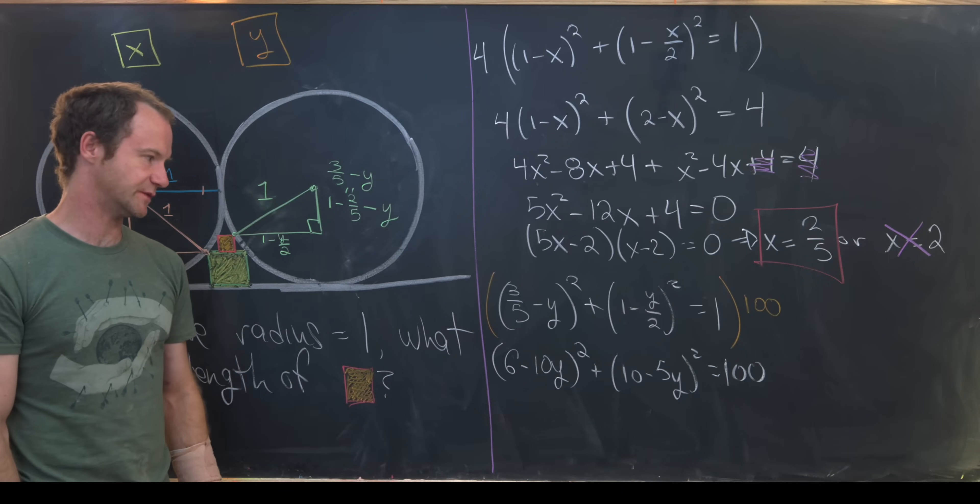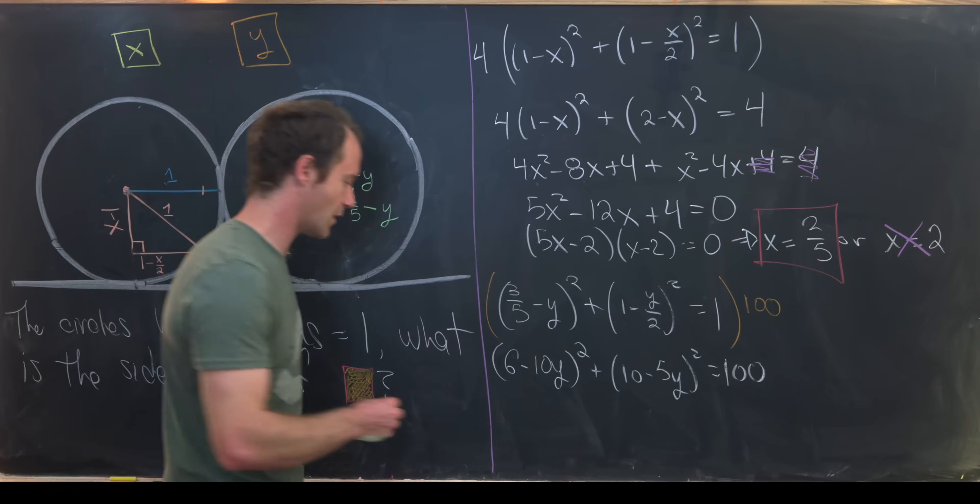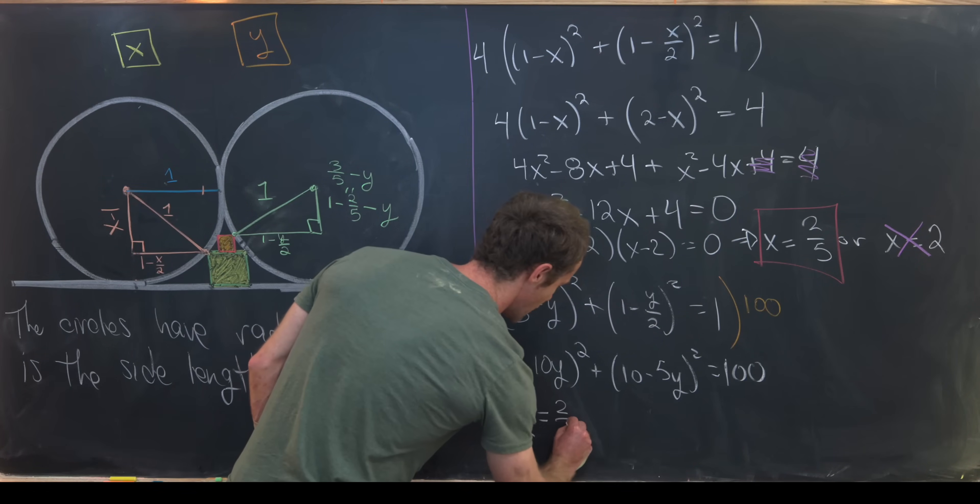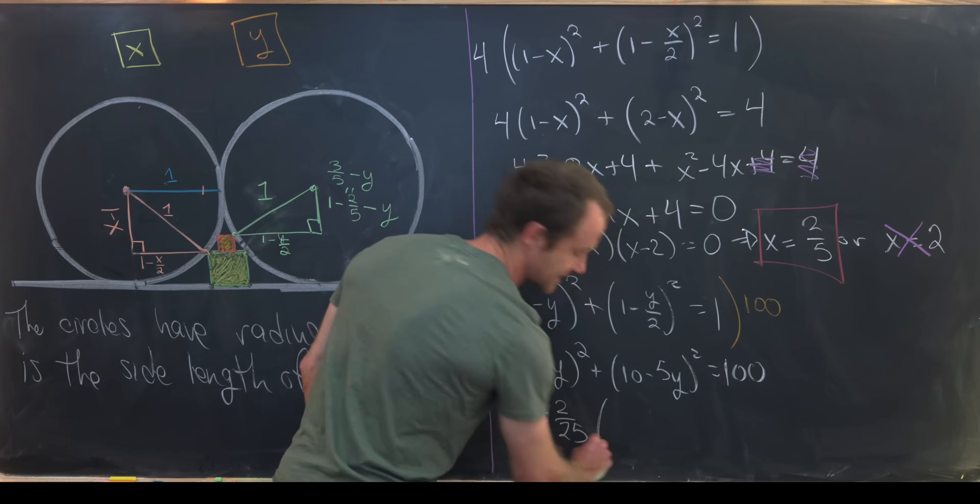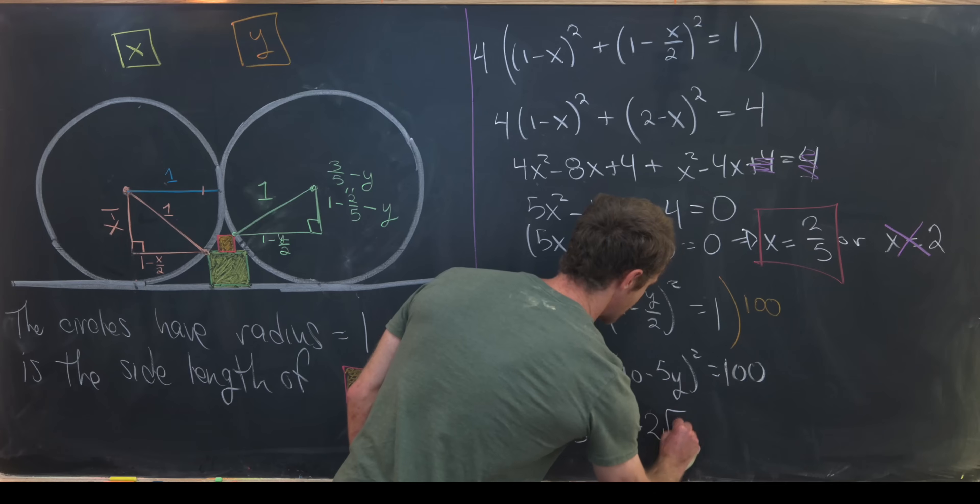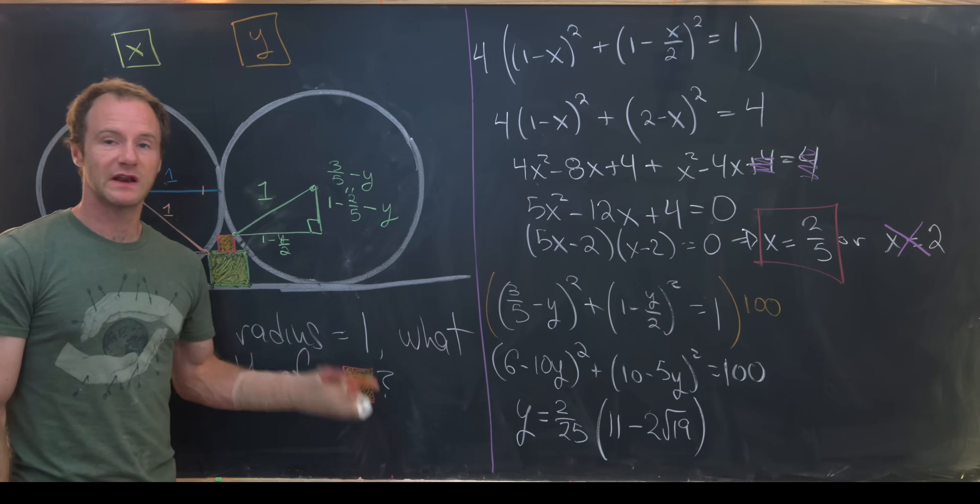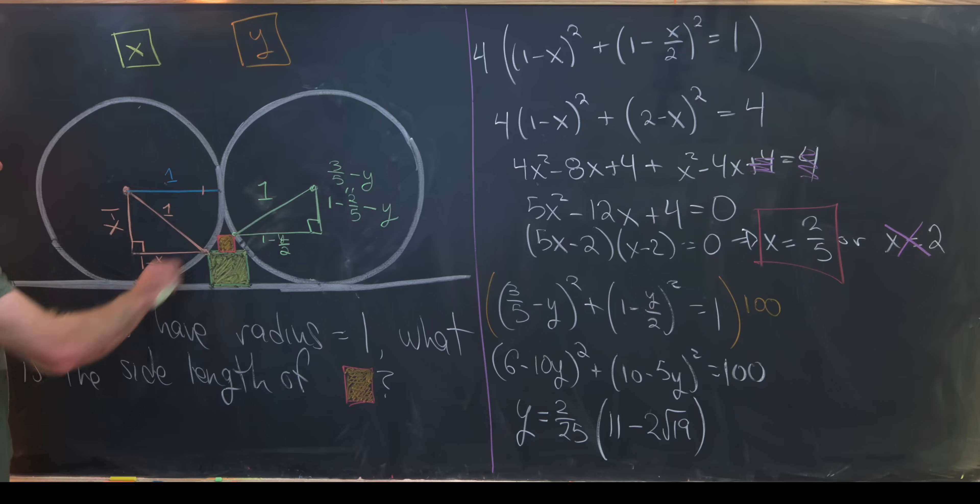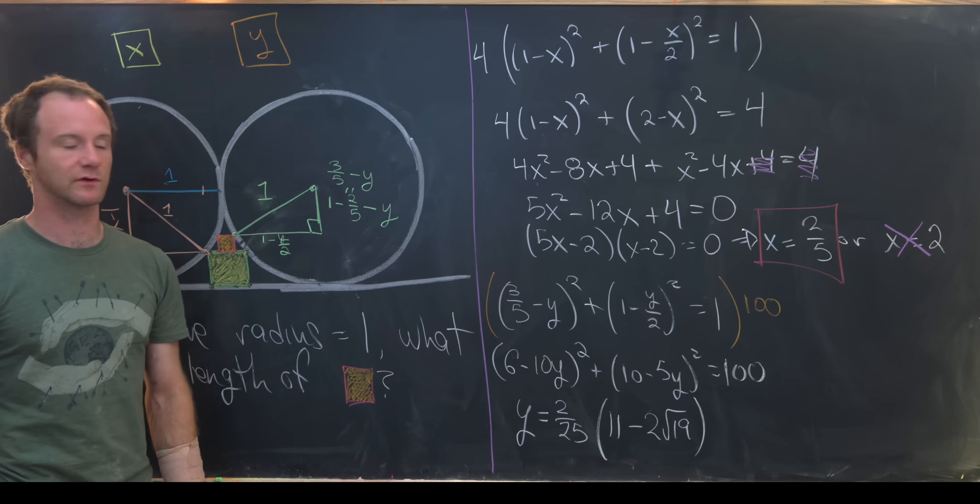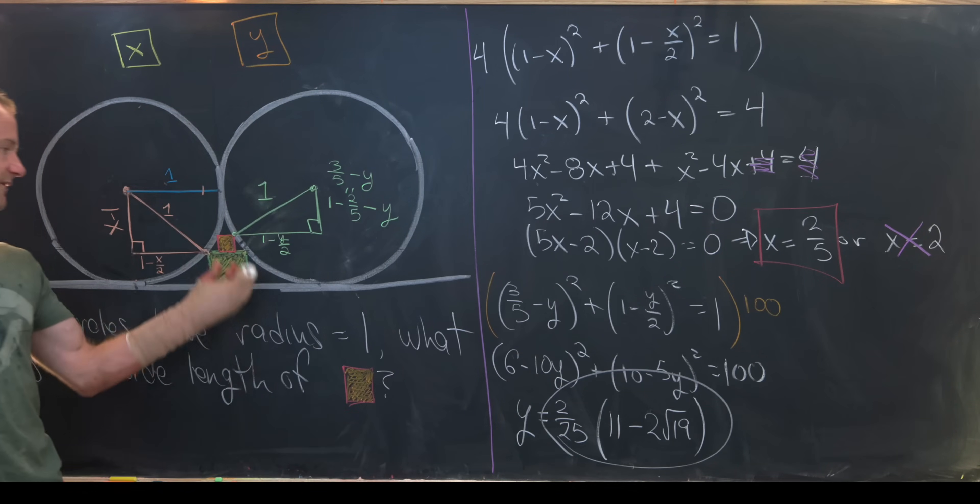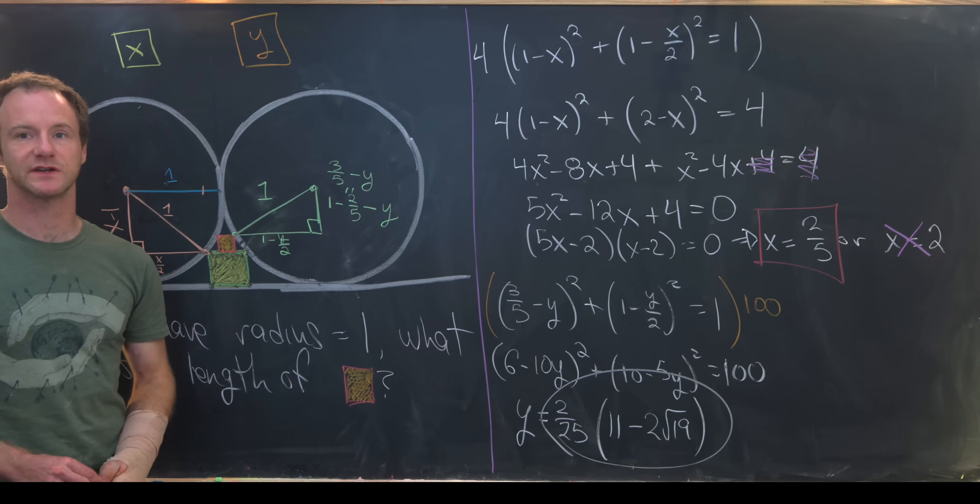And now we've got a quadratic equation that we can solve for y. So I'll spare you the details. All you do is multiply this all the way out and use the quadratic formula. Here we'll get y is equal to 2/25 times the quantity (11 ± 2√19). But in fact, we'll throw away the 11 plus 2√19 because that'll give us too big of a square and keep 11 minus 2√19. And so in the end, this is the side length of our orange square, which we're going for. And that's a good place to stop.